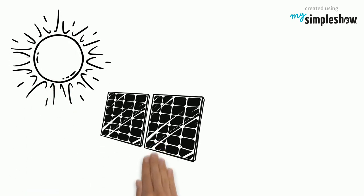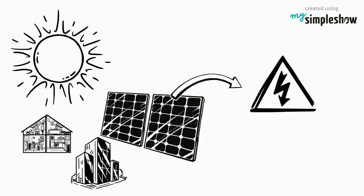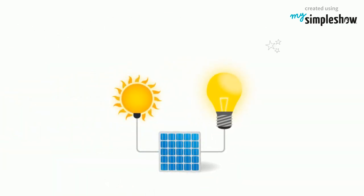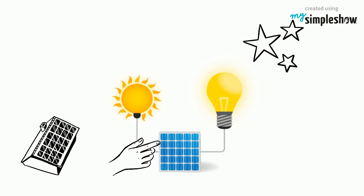Specifically, solar panels harness energy from the sun and convert it into electricity in order to power homes and businesses. They do this by exciting electrons in silicon cells using the photons of light from the sun. Most of the time, these panels are placed on the roof in order to get as much exposure to the sun as possible.